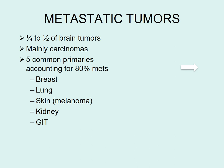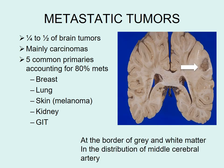Metastatic tumors to the brain are mainly carcinomas. Five common primary sites account for 80% of metastases: breast, lung, skin, kidney, and GIT. They usually occur at the junction of gray and white matter in the distribution of the middle cerebral artery, as seen with the arrow pointing toward the metastatic tumor.